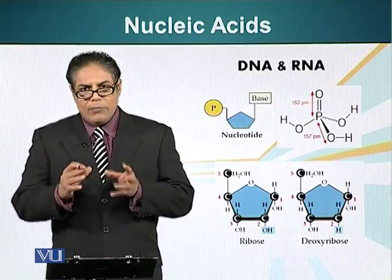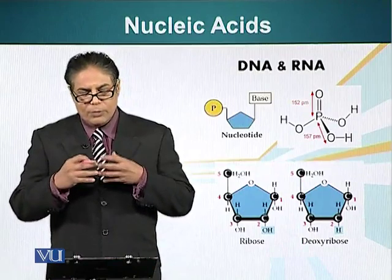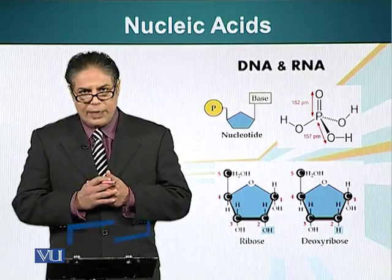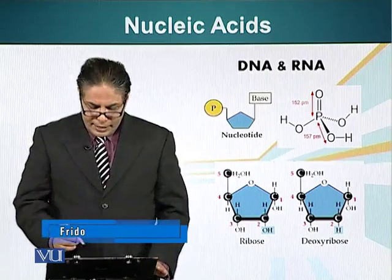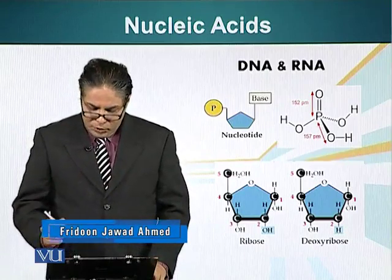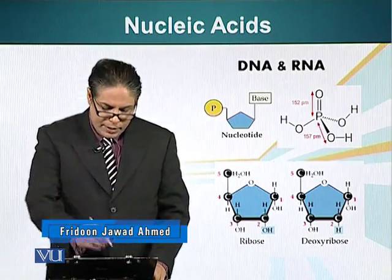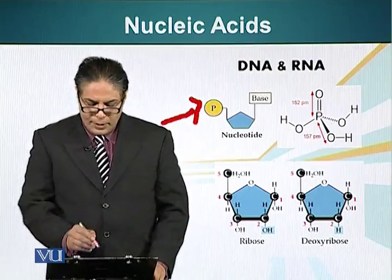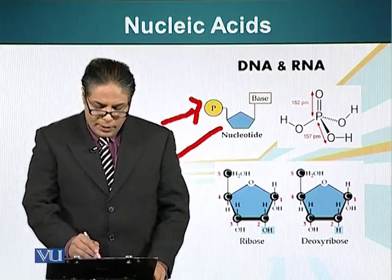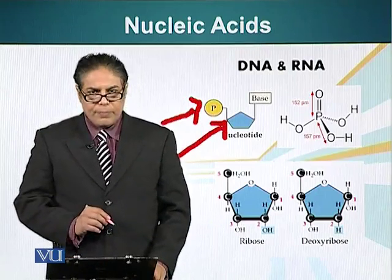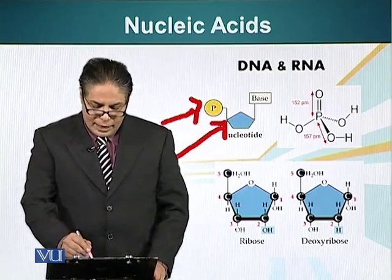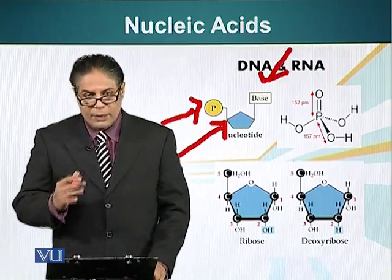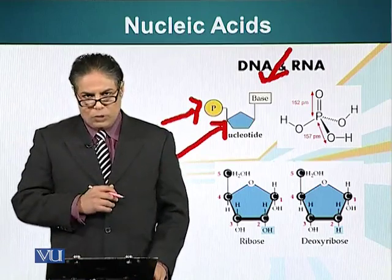The monomer which makes nucleic acids is called the nucleotide. It has three domains: a phosphate group — highlighted here as the P in the yellow ball — a sugar molecule, a pentose sugar, and a nitrogenous base. Now let's look at the structure of these individual components.